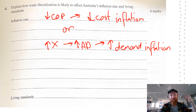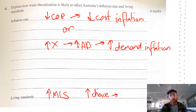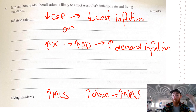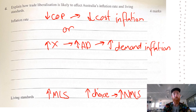For living standards and trade liberalisation: access to cheaper imports increases material living standards as we maximise our income, and access to more choice is favourable for non-material living standards. If there's more demand for exports, there's more employment and higher average incomes, raising material living standards. You could also mention trade liberalisation causing businesses to struggle to compete internationally, leading to structural unemployment and lower material living standards. As long as you justify your points you'll be fine.